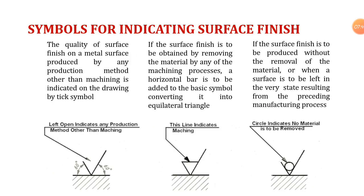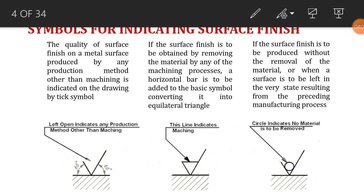Now moving to the symbol for indicating surface finish. You can see the surface finish symbol, which shows how much surface finish is to be provided. There are three kinds of symbols. The first one you can see here is an open arrow shape drawn at 60 degrees.